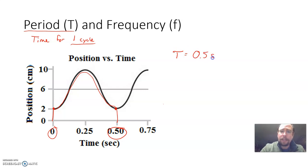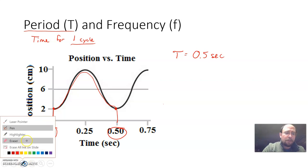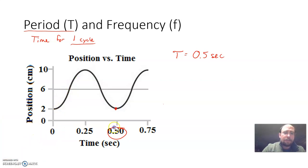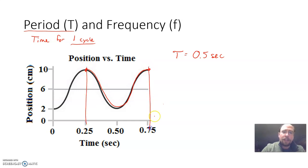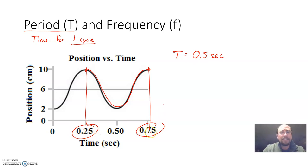We get 0.5 seconds for the period. You can get that period in a couple of different ways — it doesn't have to be from bottom to bottom. If you started at the top, one complete cycle would be when you get back to the top, and the time for that one cycle is still 0.5 seconds, because it went from 0.25 to 0.75, which is 0.5.